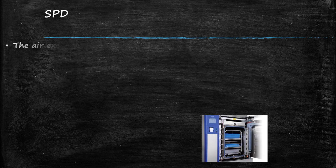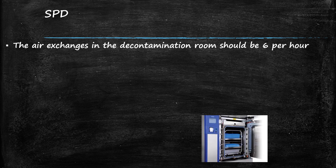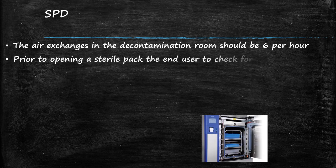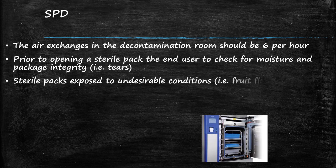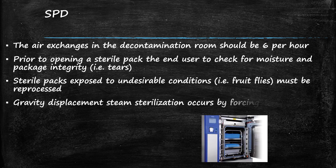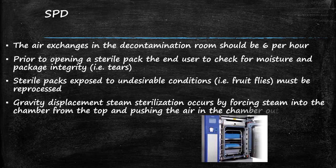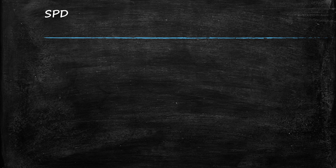The air exchanges in the decontamination room should be six per hour. Prior to opening a sterile pack, the end user is to check for moisture and package integrity, looking for tears, a change in the color of the package, the outside of the package, or any wrinkles. Sterile packs exposed to undesirable conditions, such as fruit flies, must not be reprocessed. Gravity displacement steam sterilization occurs by forcing steam into the chamber from the top and pushing the air in the chamber out the bottom. Low-level disinfection can occur for blood pressure cuffs.